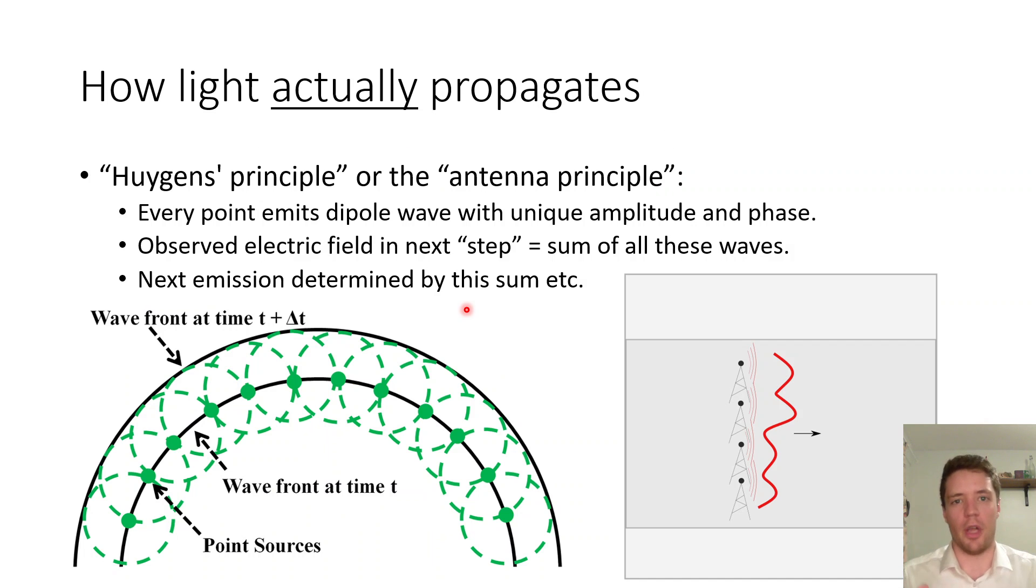So to understand what's going on here we first have to remind ourselves how light truly propagates and to do this I'd like to use Huygens' principle which I think might be the most underrated principle in physics. I also like to call this the antenna principle because I think it gets more of a microscopic picture of what's actually going on as the light propagates forwards.